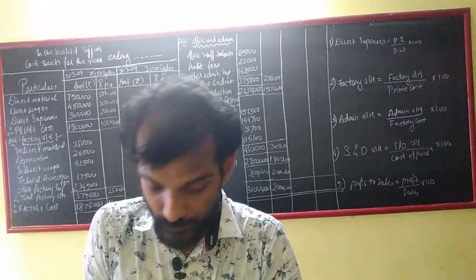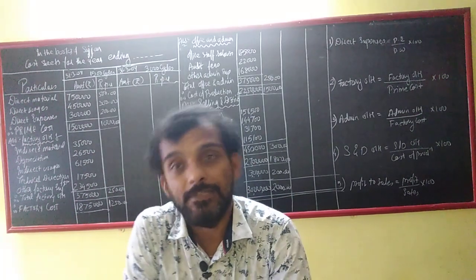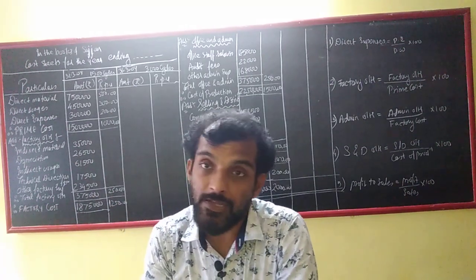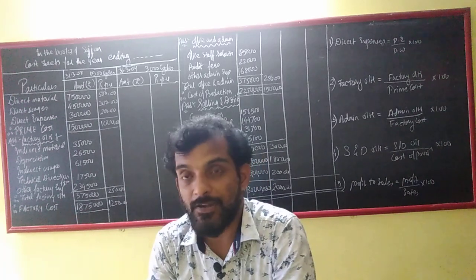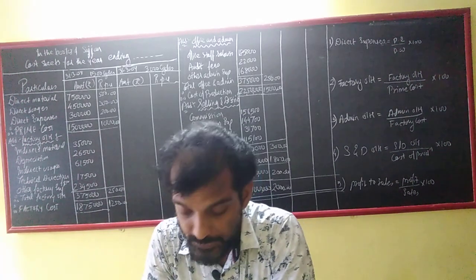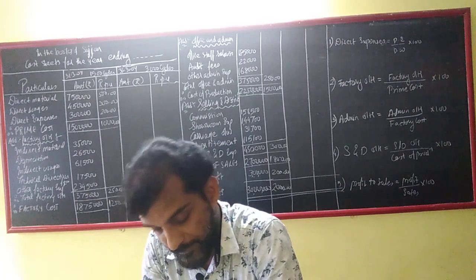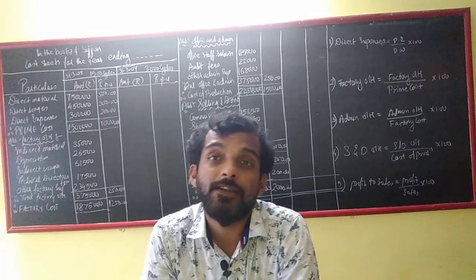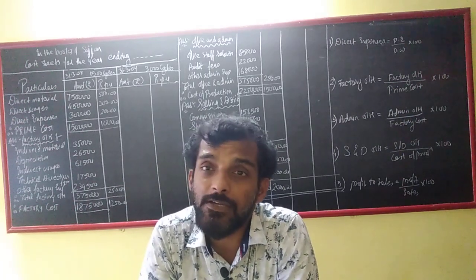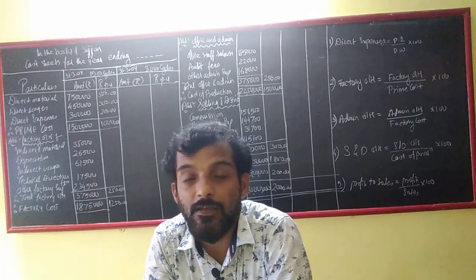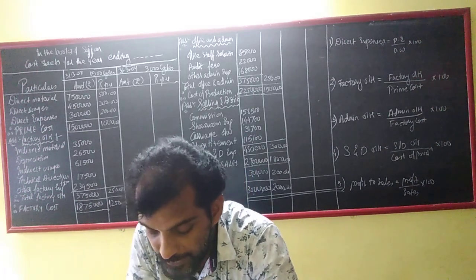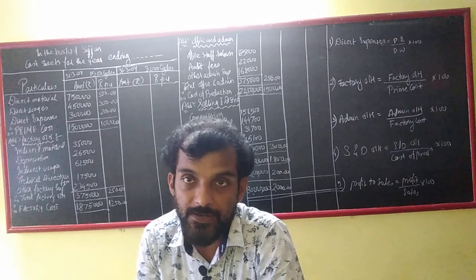Direct wages — again Prime Cost. Direct expenses — same, Prime Cost. Indirect material consumed — we have done this in question number 1. Factory overheads, then depreciation of machinery — again Factory overheads. Indirect wages — Factory overheads. Technical directed fees — Factory overheads.